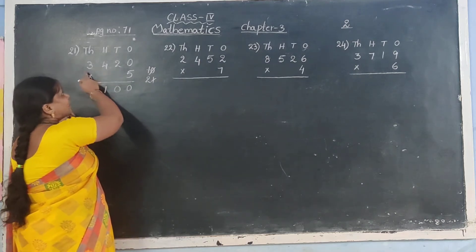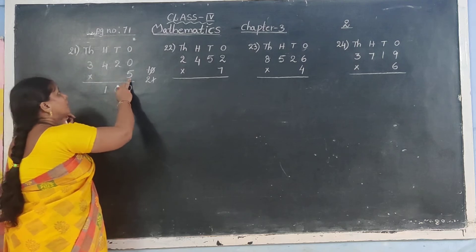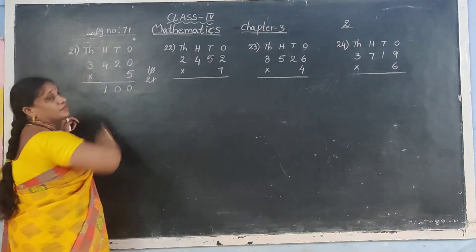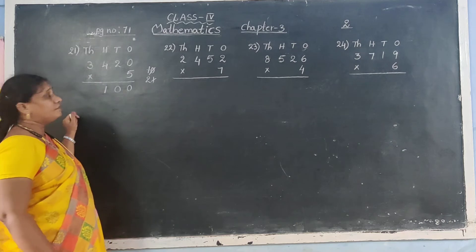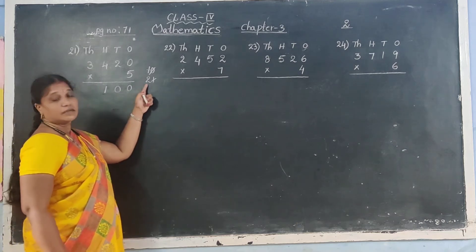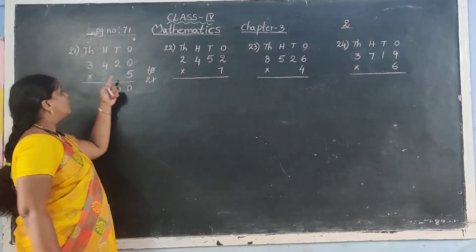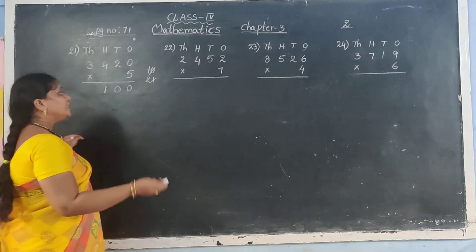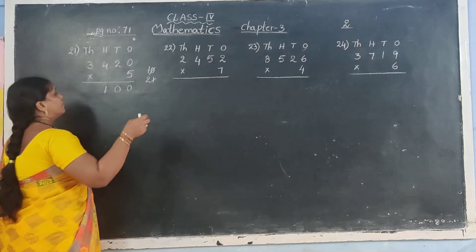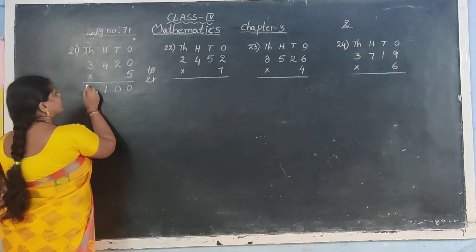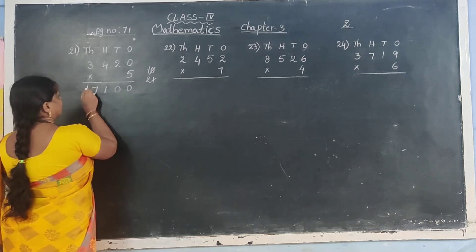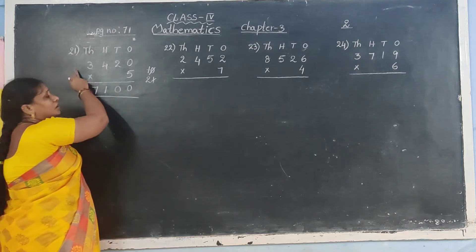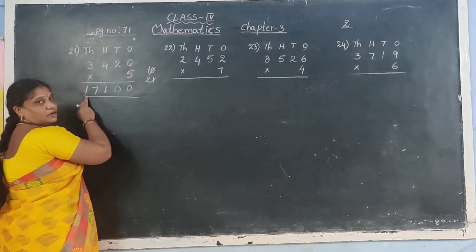5 table, write up to 3. 5 threes are 15. Carry number is done now. 5, 3 is 15 plus 2 is 17. Write 17. Answer. Why directly write? Next digit is not there now, so you can write 2 digits here.